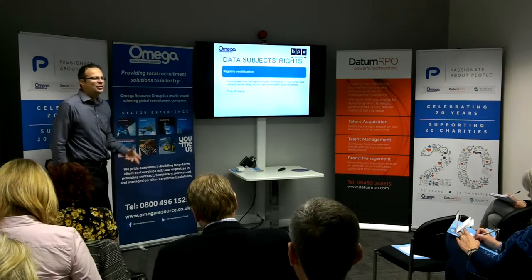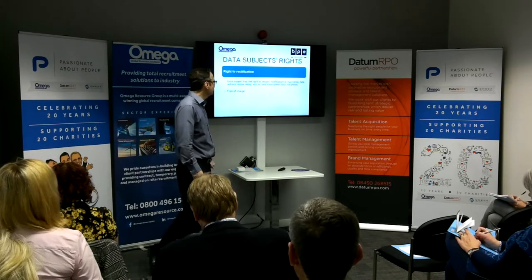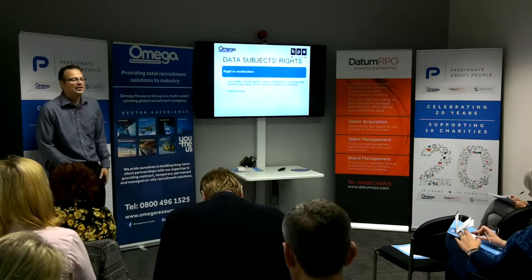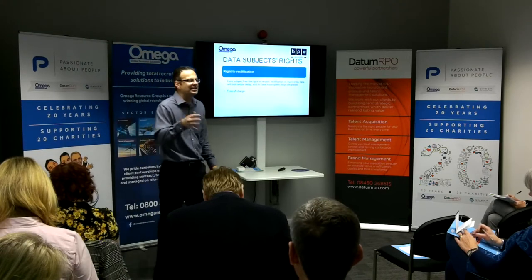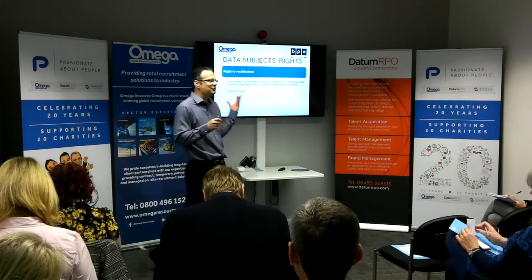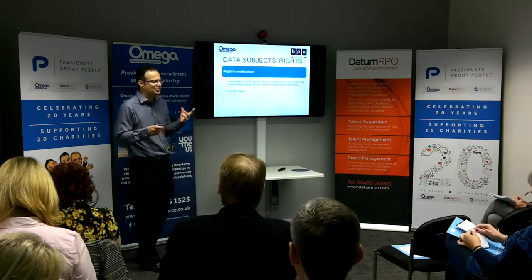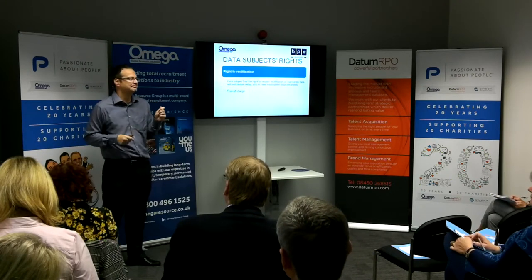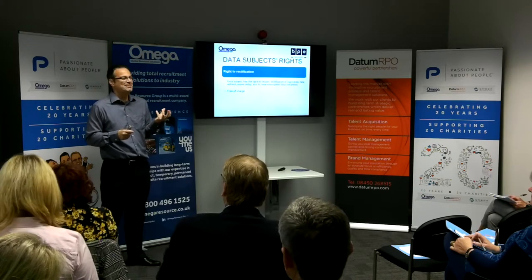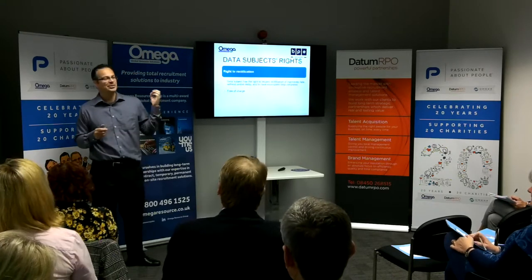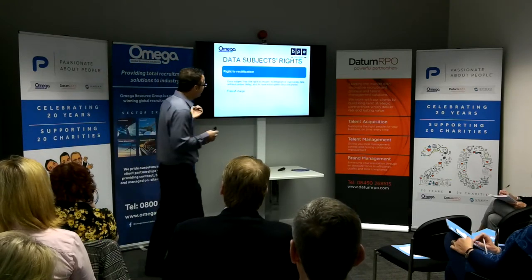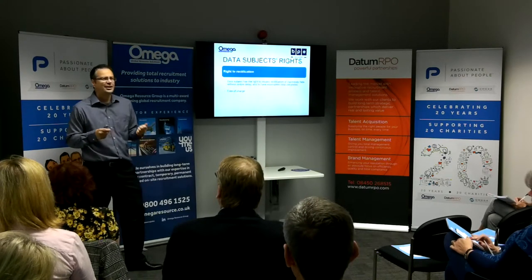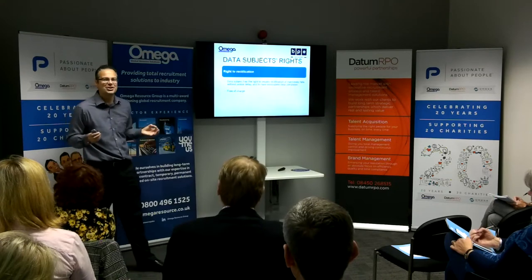Individuals have a right to have their data rectified if it is inaccurate — again, free of charge. But as a company, why wouldn't you? If an employee or customer contacts you to say you've got their address or name wrong, you'd want to correct it anyway. A good example: a 12-year-old boy signed up for an AA card and it arrived addressed to 'Miss Callum.' That's a perfect example of someone exercising the right to rectification. As an organisation you want accurate data anyway, so not a problem.